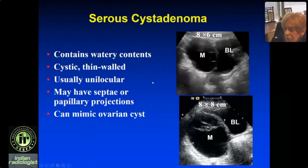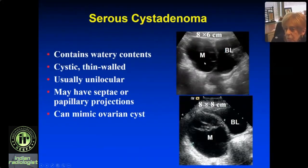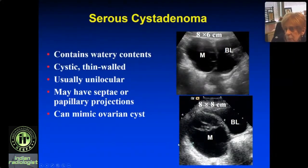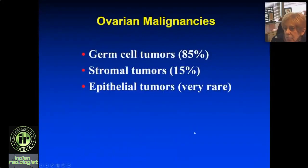The serous cystadenoma contains watery contents with a thin wall, and occasionally you see a few septations. This patient had pain and here's the mass — it looks like an adnexal cyst, it's big. We brought this patient back and it never got smaller, so they went to surgery — it was a serous cystadenoma. Here's another one: a huge mass with a few septations, brought back once or twice, never got smaller — also a serous cystadenoma.